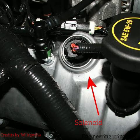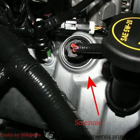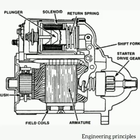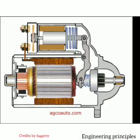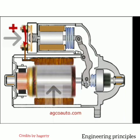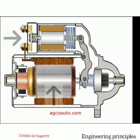Example application of solenoid used in cars for ignition and car start purpose. The solenoid is the part of a car's starting system that transfers the electric current from the ignition to the motor. Then the car motor starts and the car will be ready to move.